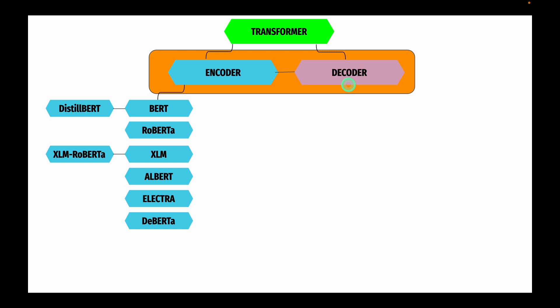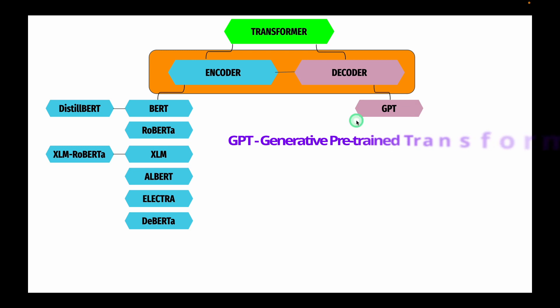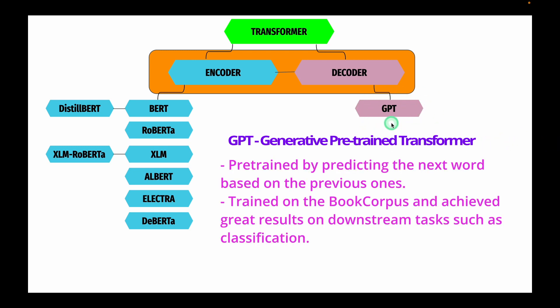Let's examine the development of these text generation models. The first decoder model is GPT, which stands for Generative Pre-trained Transformer. GPT is pre-trained by predicting the next word based on the previous ones, and is trained on the BookCorpus, achieving significant results on downstream tasks such as classification.